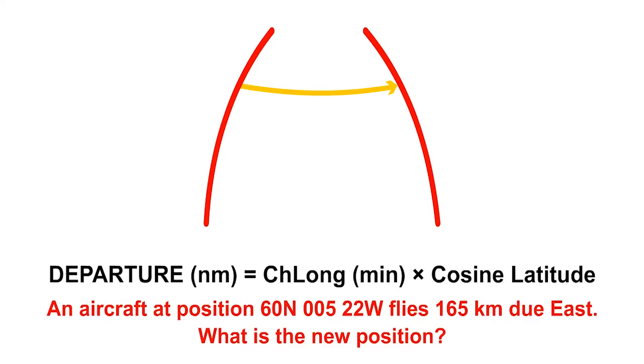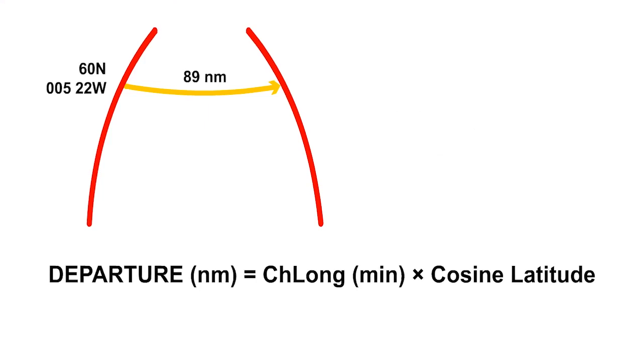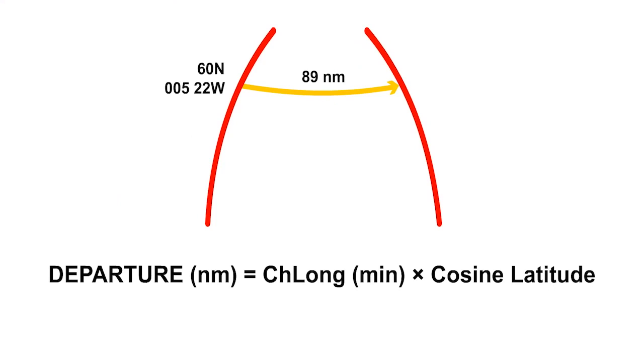An aircraft at position 60 north and 5 degrees and 22 minutes west flies 165 kilometres due east. What's the new position? Firstly, convert 165 kilometres to nautical miles. To do this, divide 165 kilometres by 1.852. The answer is 89 nautical miles. Now we need to substitute into the departure formula. So, departure equals the change of longitude in minutes multiplied by the cosine of the latitude.